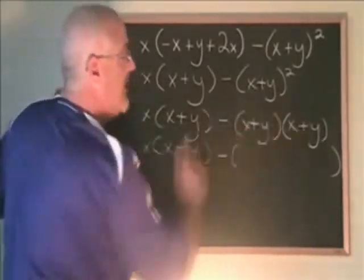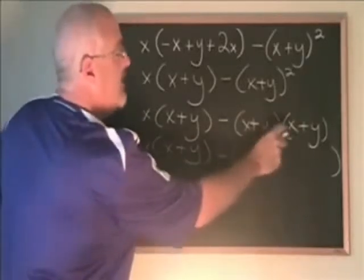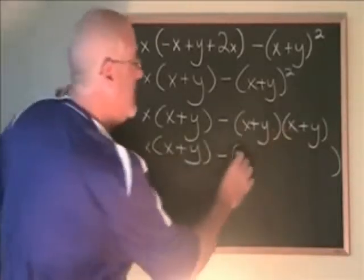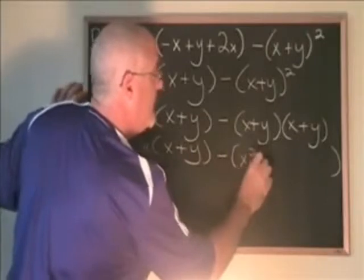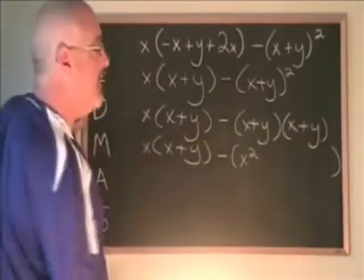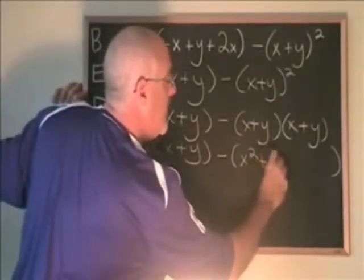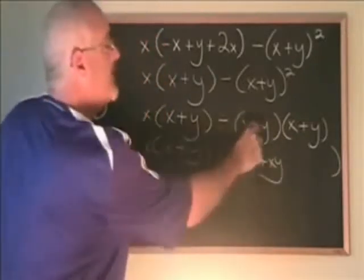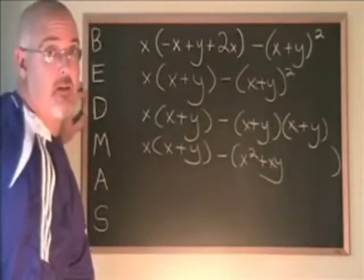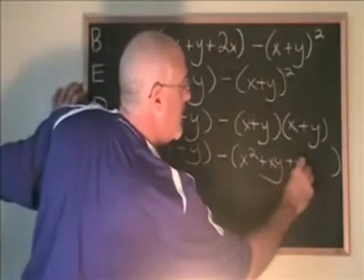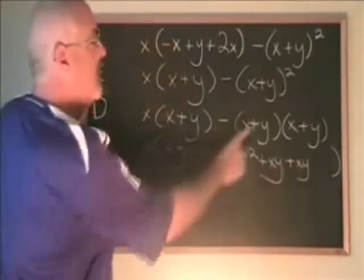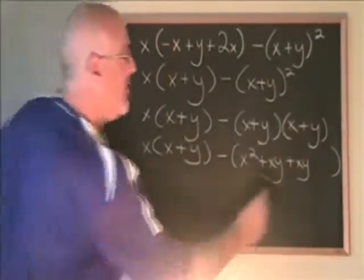First times first is x times x, which gives x squared. First times second is x times y, which is xy. Second times first is y times x, which is also xy. Finally, second times second is y times y, which is y squared.